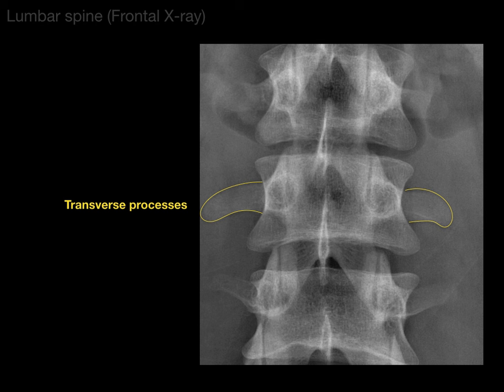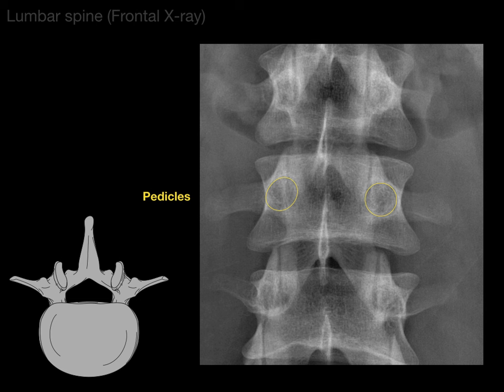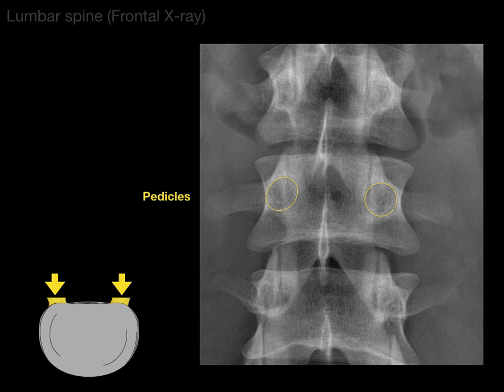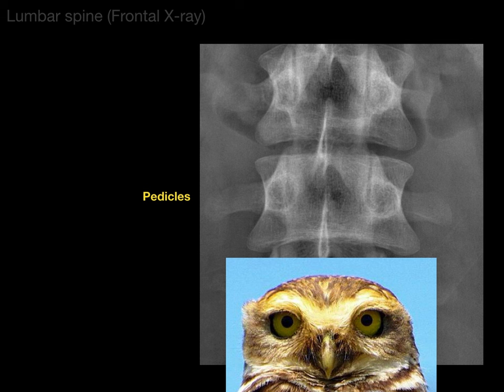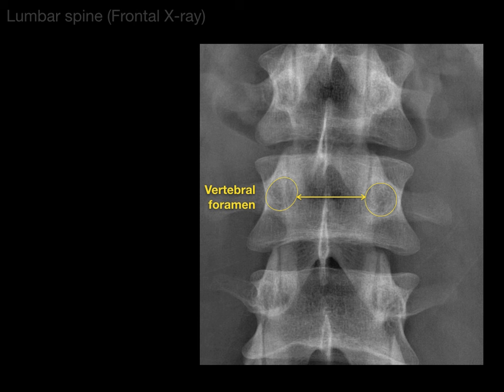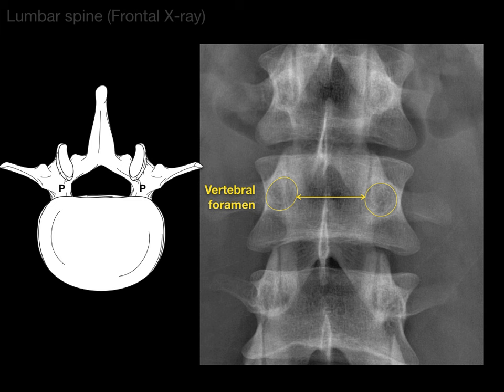Then we have these circles. What are they? Those circles are pedicles. If we take a look at an inferior view of one of the lumbar vertebrae, the pedicles are shown in yellow. Now, if we take a coronal plane and cut that off, we look at those two stubs of the pedicles — they actually look like two owl's eyes. When you see them on a frontal view of a lumbar x-ray, picture them as owl eyes. The space between pedicles is the vertebral foramen — there are the pedicles on either side, and that's the vertebral foramen housing the spinal cord and cauda equina.